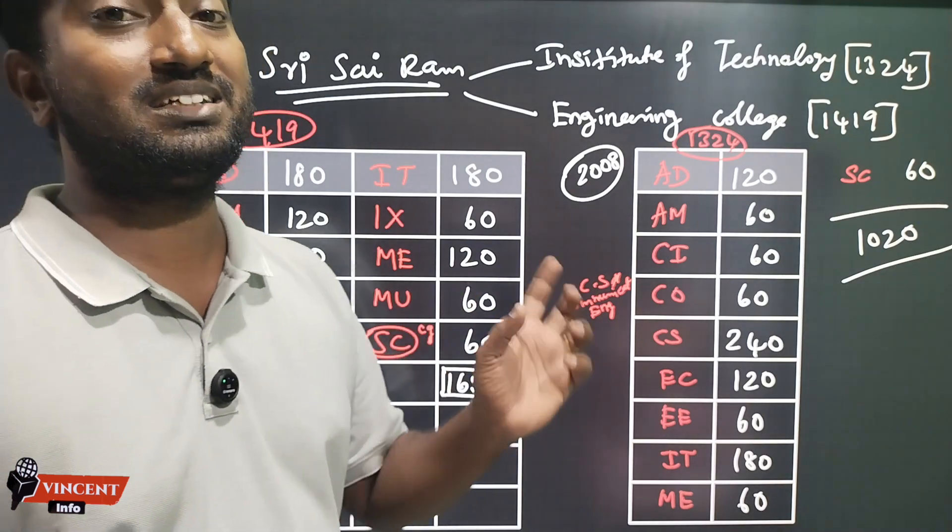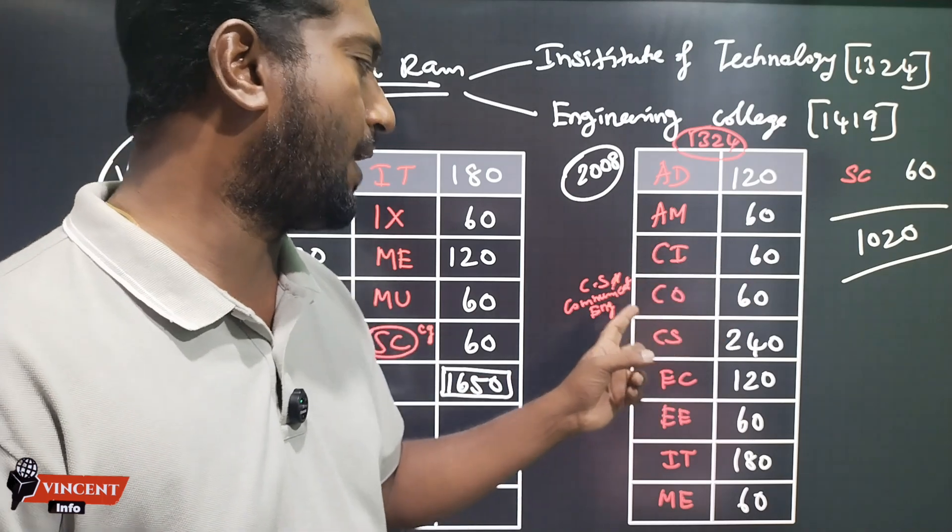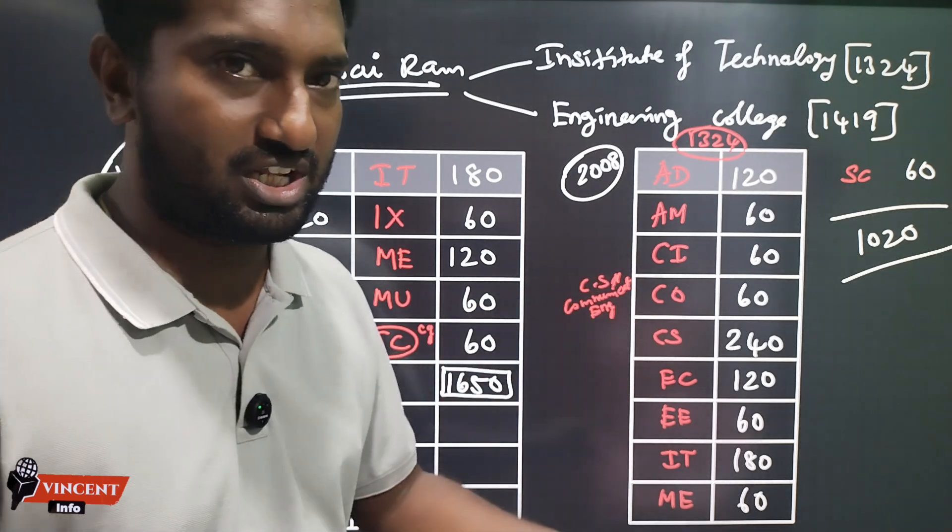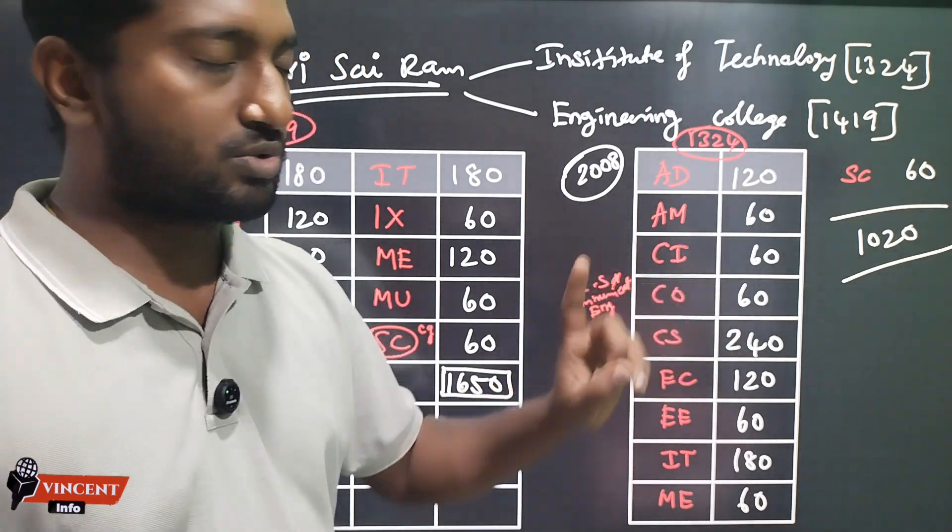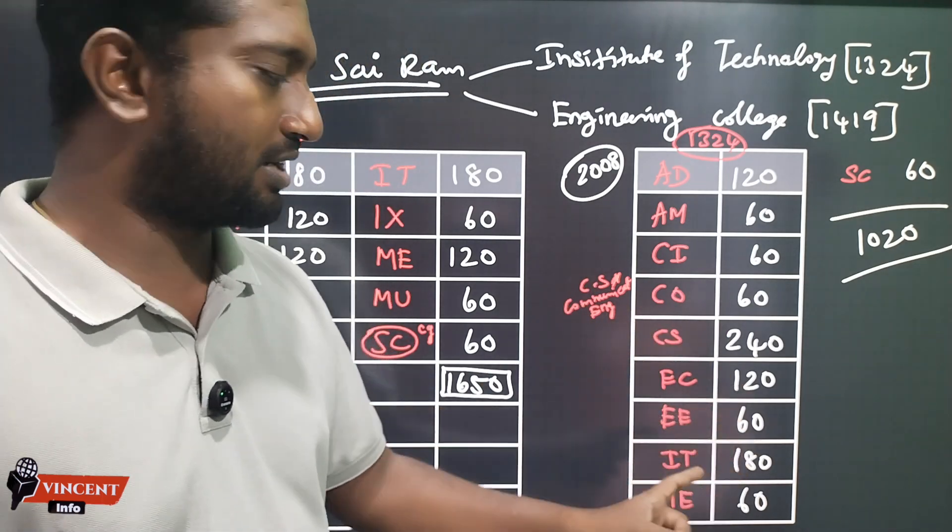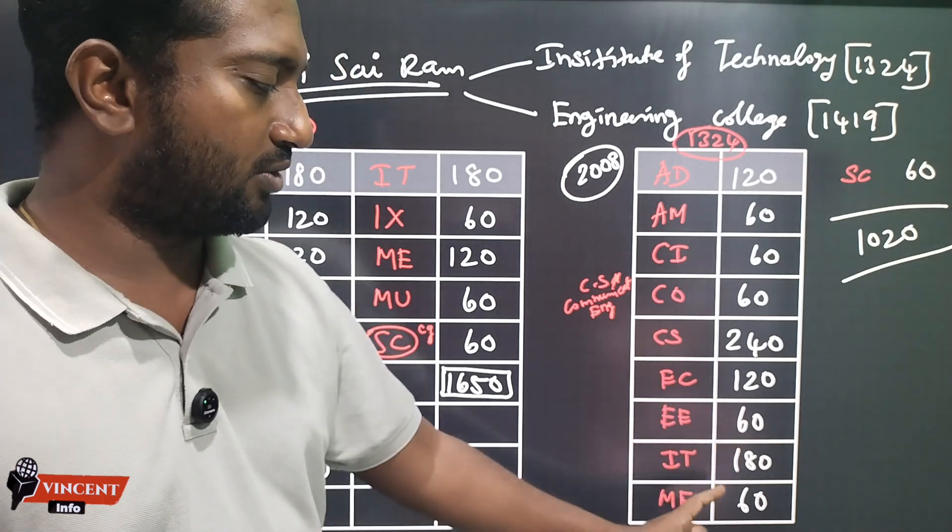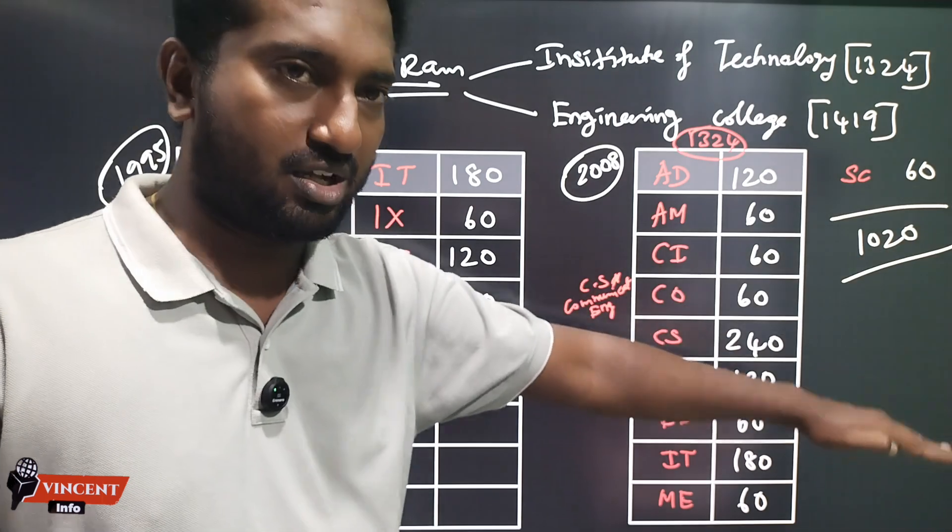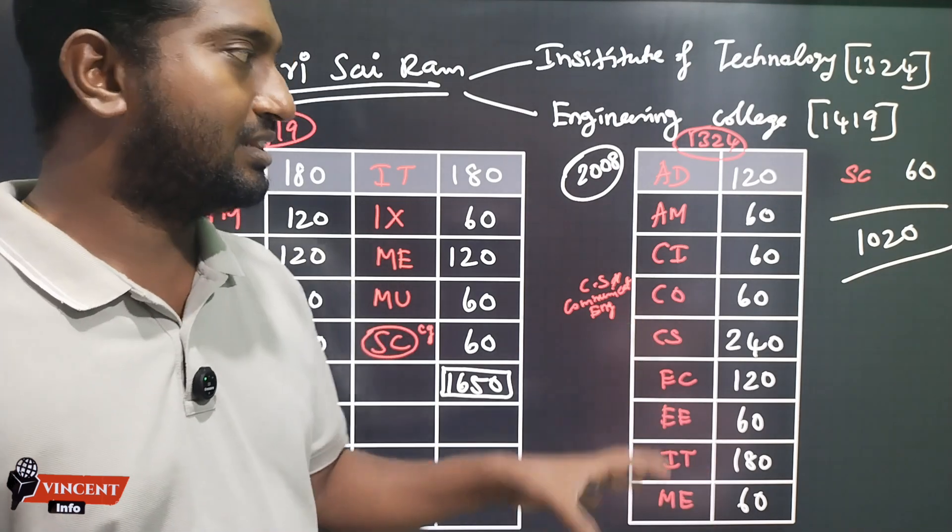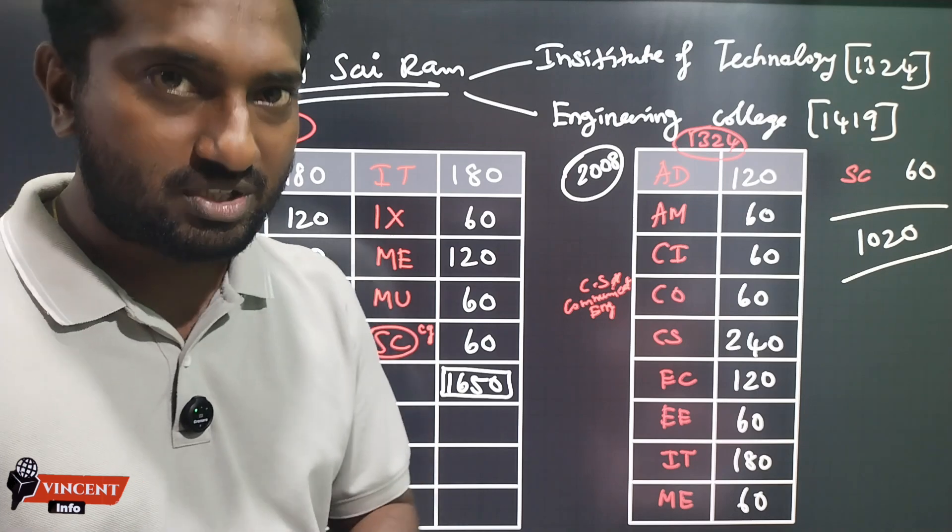That Internet of Things course, Computer Science with Internet of Things, that is computer science communication engineering. Computer science is pure computer science. ECE is there, IT is there, mechanical engineering, cyber security. Computer science has 20 seats. In this case we have the placement and the fee structure.